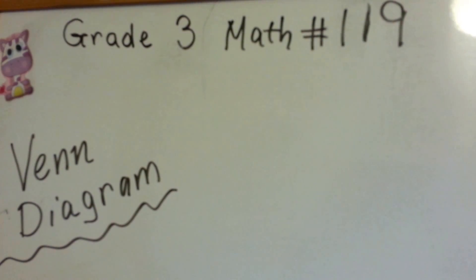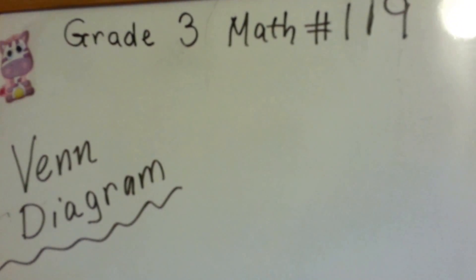Grade 3 math number 119, Venn Diagram. Ooh, what is that?